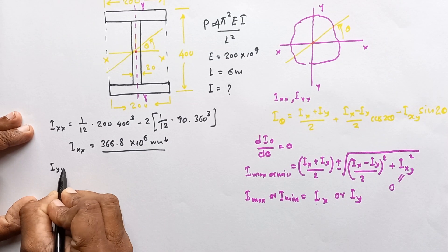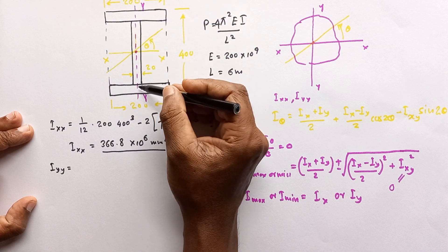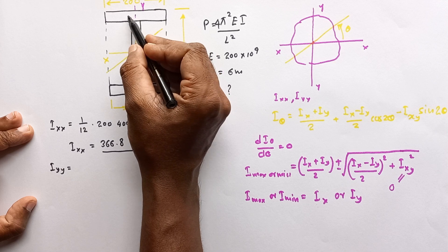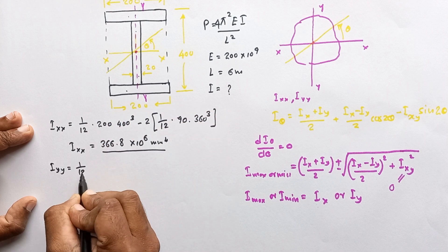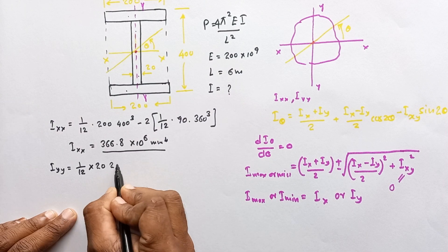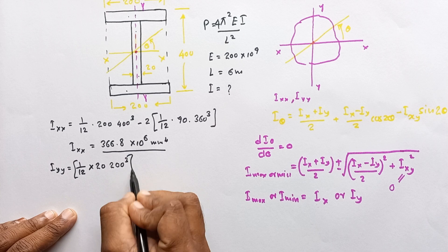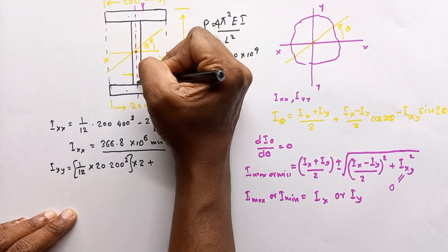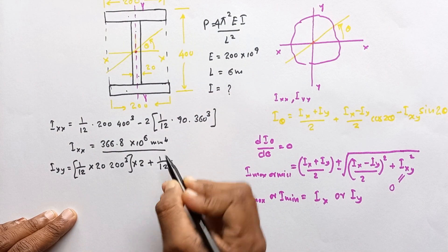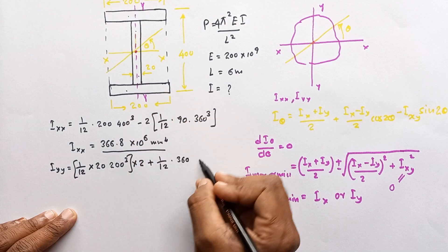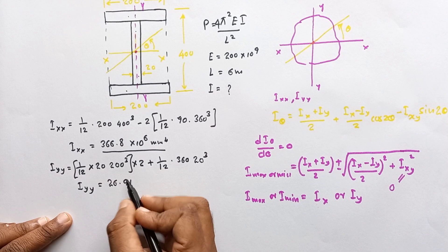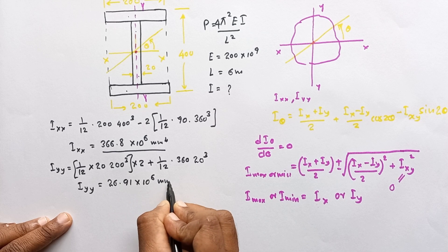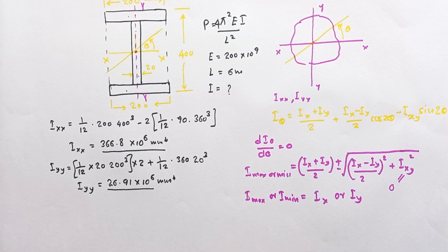To calculate I_yy, I consider three areas separately and add their I values together. I_yy = 2 × (1/12)(20)(200³) + (1/12)(360)(20³). This gives I_yy = 26.91 × 10⁶ mm⁴.